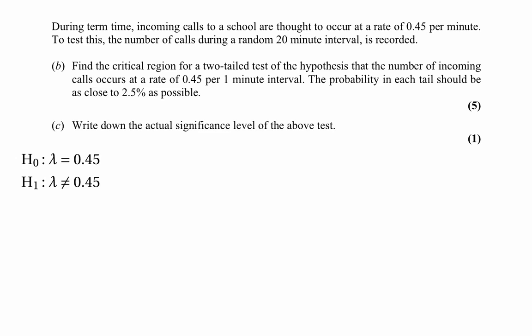It's a two-tailed test, so the alternative hypothesis is that lambda is not equal to 0.45. These hypotheses relate to a one-minute interval, but our test statistic is based on a 20-minute interval. So we need the expected number of calls in 20 minutes: 20 times 0.45 equals 9. Our test statistic therefore has the Poisson distribution with parameter 9, since we're dealing with a number of events in an interval of time.